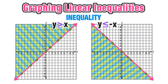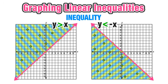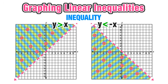With equations, all points on the line are solutions. With inequalities, not only are the points on the line solutions, but all points in the shaded area are solutions as well. When we use just greater than or less than symbols (without the equal to), the points on the line are no longer included — only points in the shaded area are solutions. In those cases we use a dashed line to indicate the line itself is not part of the solution.